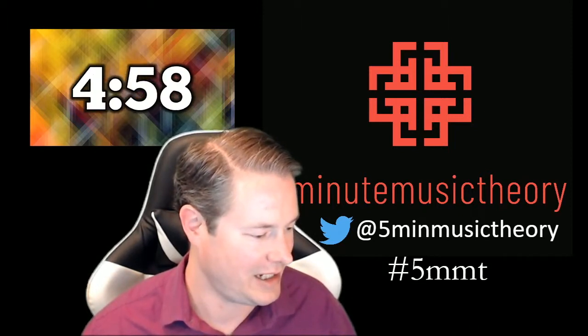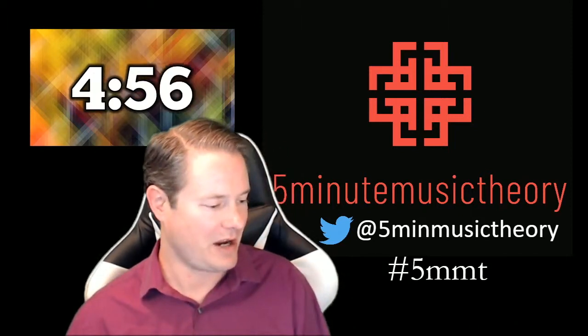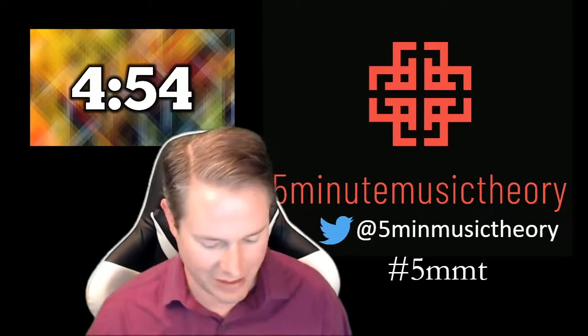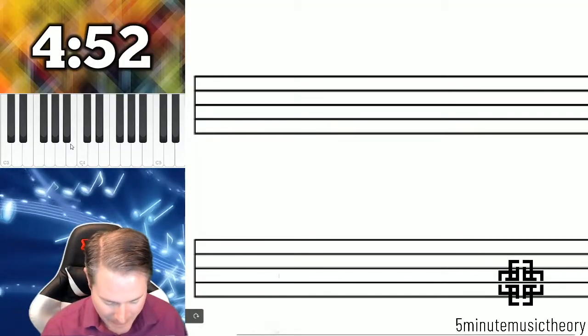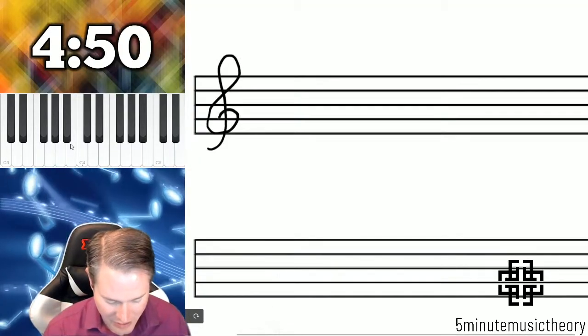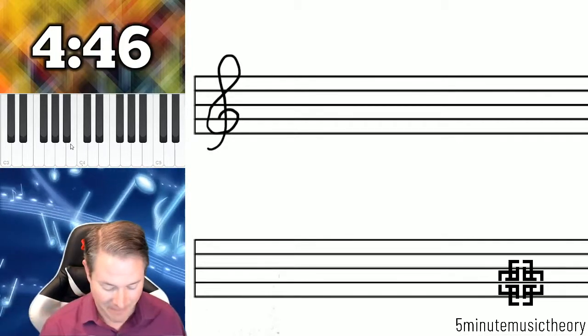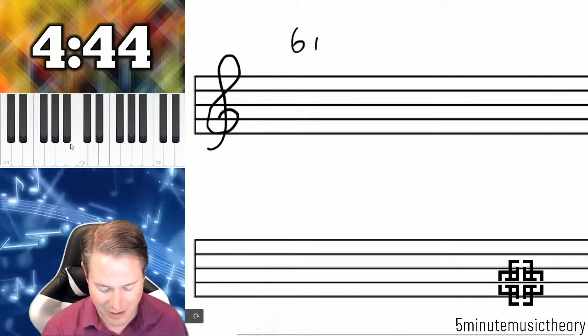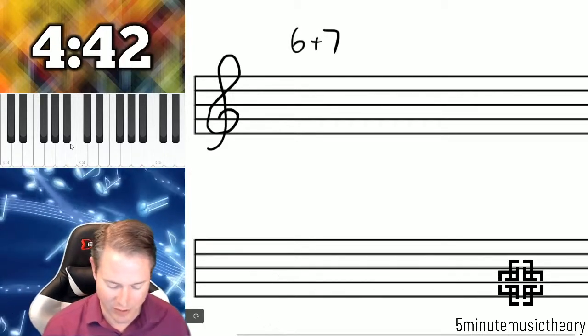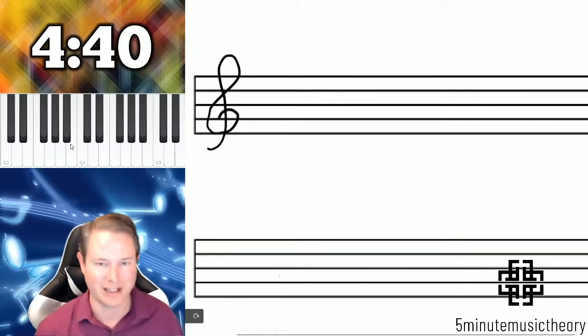Let's start that timer and head over here to calculate some sixths and sevenths using the complementary intervals method. We've used the counting half steps method with seconds and thirds, the BFF method for fourths and fifths. For sixths and sevenths we use the complementary intervals method which is actually quite easy once you get it down.